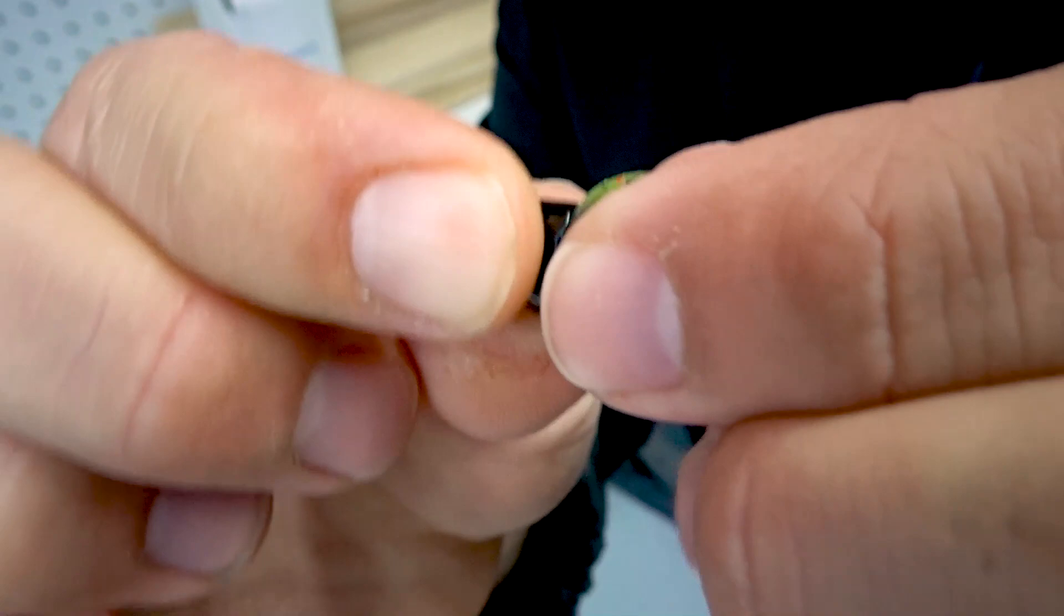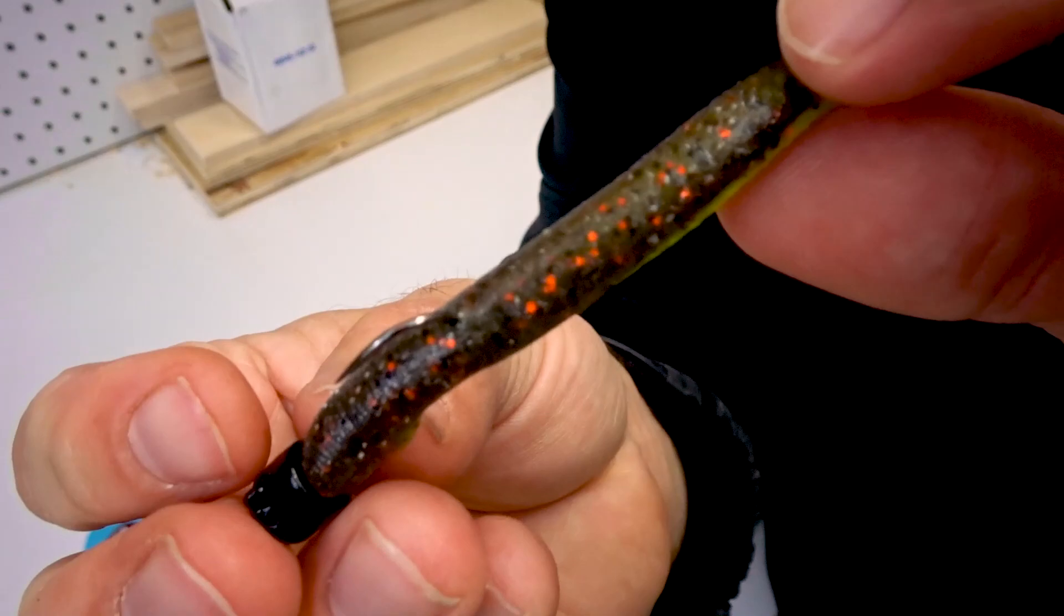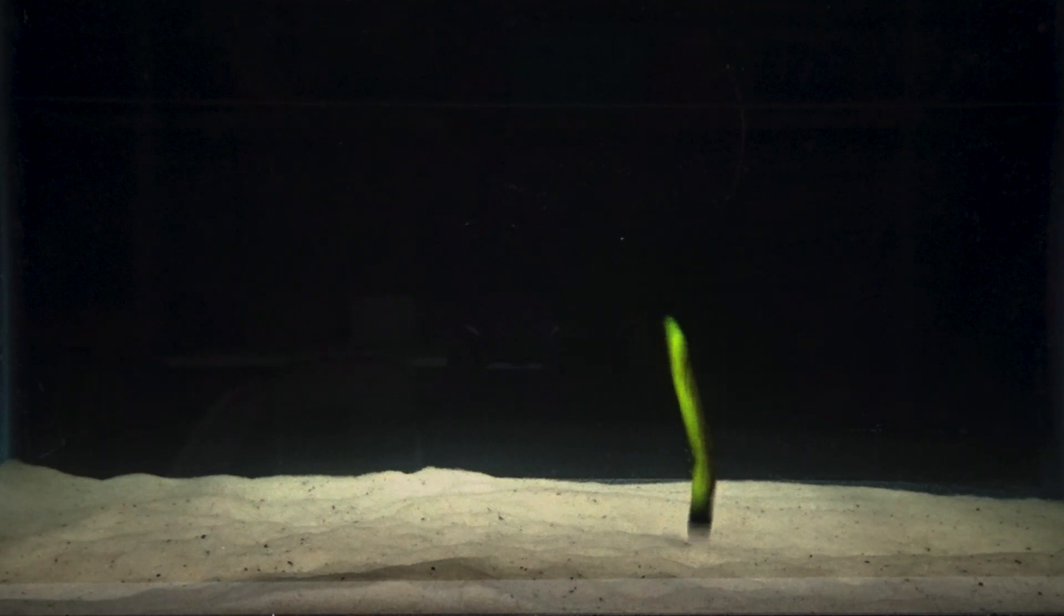Another hard part is getting this up there because of elastic and keeping that worm up there by the head. Again with the crazy glue, small little drop, put it there and believe me it'll work wonders. This is another one of my favorites right here, make a bass go crazy.